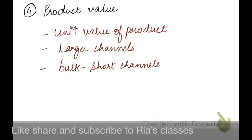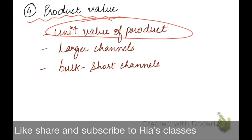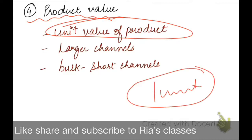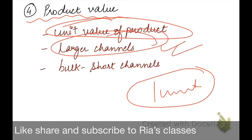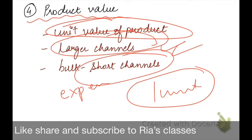The last aspect related to our product is the product value. If our product is low cost, we can use long channels. But if our product is very expensive, we prefer a short channel for these products, because using a short channel allows us to sell in bulk or bundle it with other products. So it depends on the product value to determine which channel we will use.